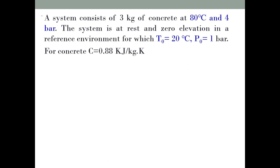In the third example, the working fluid is concrete. Consider a system of 3 kg of concrete at 80°C and 4 bar, at rest and at zero elevation — so no kinetic energy and no potential energy. The reference environment has T₀ = 20°C and p₀ = 1 bar. For concrete, the specific heat c is given as 0.88 kJ/(kg·K).